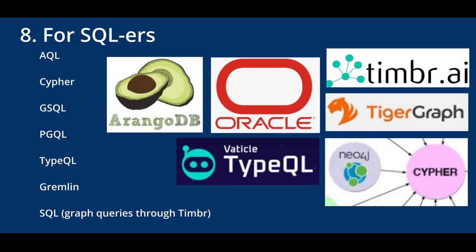Category eight is SQL users. If you're not using graph yet, there's an honorable mention worth noting: Timber actually allows you to use SQL queries on top of graph, which I didn't introduce at the beginning but is worth checking out. The query languages in this category will potentially be easier to pick up if you're already a SQL user. Keep in mind that's not necessarily where you want to stop — graph offers a lot more than relational databases — but it's a great entry point before moving to a more graph-native query language.